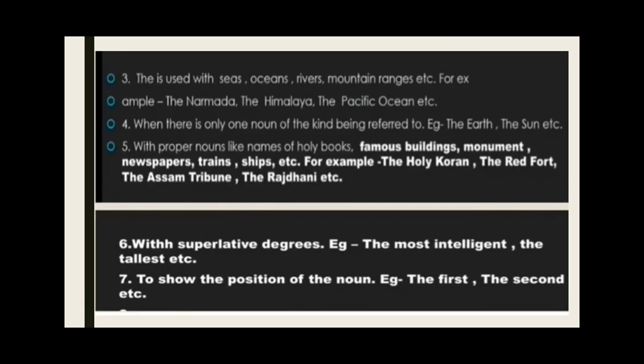'The' is used before seas, oceans, rivers, and mountain ranges — for example, the Narmada, the Himalayas, the Pacific Ocean. Fourth, when there is only one noun of its kind being referred to — for example, the earth, the sun. Fifth, with proper nouns like names of holy books, famous buildings, monuments, newspapers, trains, ships — for example, the Holy Quran, the Tribune, the Rajdhani. Sixth, with superlative degrees — for example, the most intelligent, the tallest. Seventh, to show the position of a noun — for example, the first, the second.